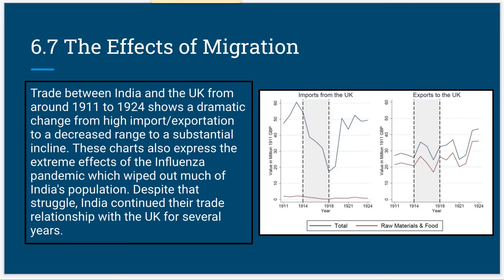Along with rebellion, there was also an increase in trade between India and the UK around 1911 and 1924. Even though there was a pandemic which wiped out quite a bit of India's population, they continued their trade relationship with the UK for several years. Even after famine and their economy being taken over, they still prospered because they all had jobs working for the British.